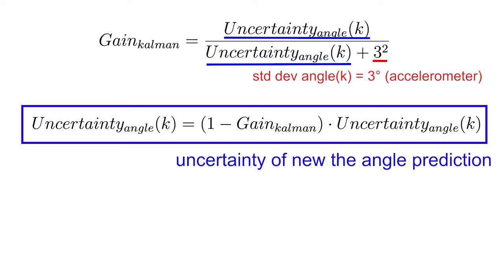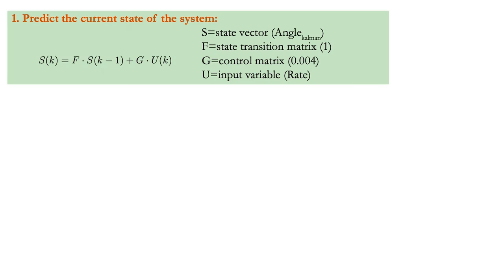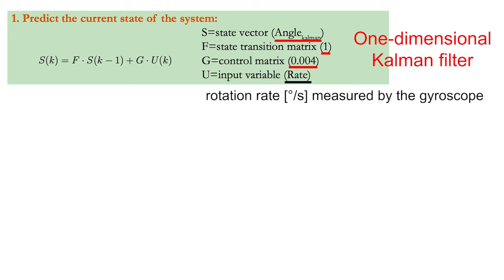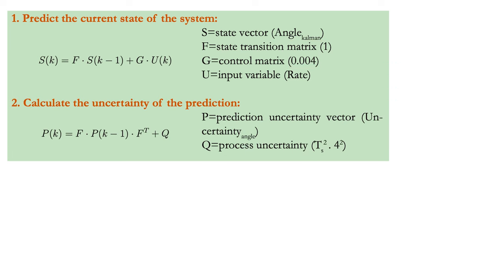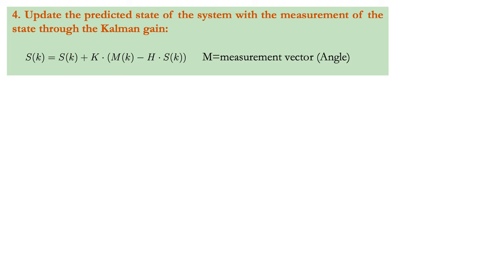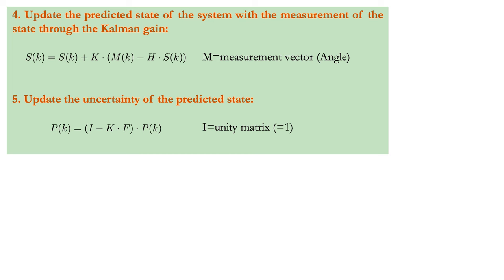Let's take the opportunity to write the Kalman filter in a more general way. The first equation predicts the current state of the system. In our one-dimensional case, the state factor is equal to the Kalman angle, the state transition matrix is equal to 1, the control matrix is the iteration length, and the input variable is the rotation rate measurement. The second equation calculates the uncertainty of the prediction, while the Kalman gain K is calculated with the third and fourth equations from the uncertainties on the prediction and measurements. Next, you update the predicted state of the system with the accelerometer measurements, and in the final equation you update the uncertainty of the predicted state.